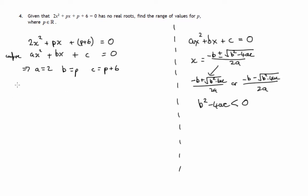So let's look at the discriminant. That's the expression that's under the square root sign if we were to solve this using the quadratic formula. So the discriminant is B squared minus 4AC. In this case, it's P squared minus 4 times A, which is 2, times C, which is P plus 6. So we get P squared minus 8 lots of P plus 6.